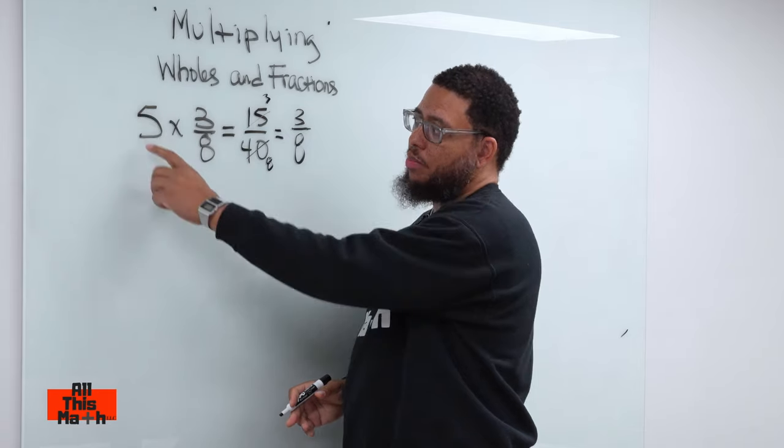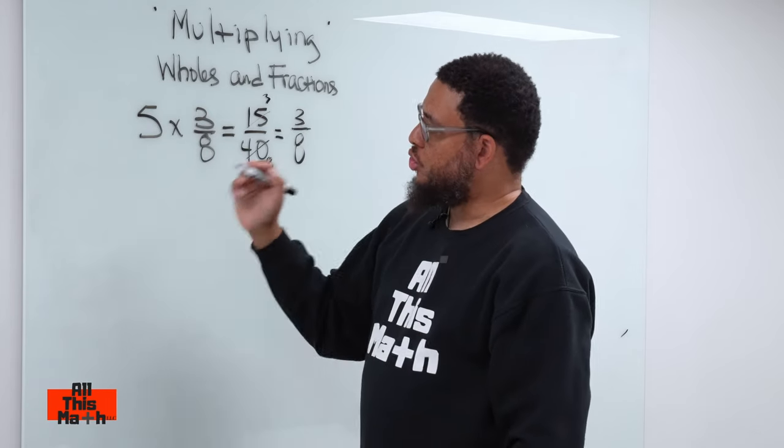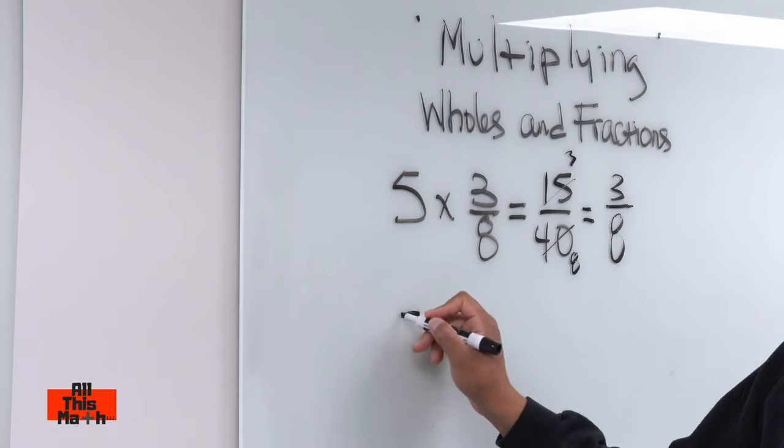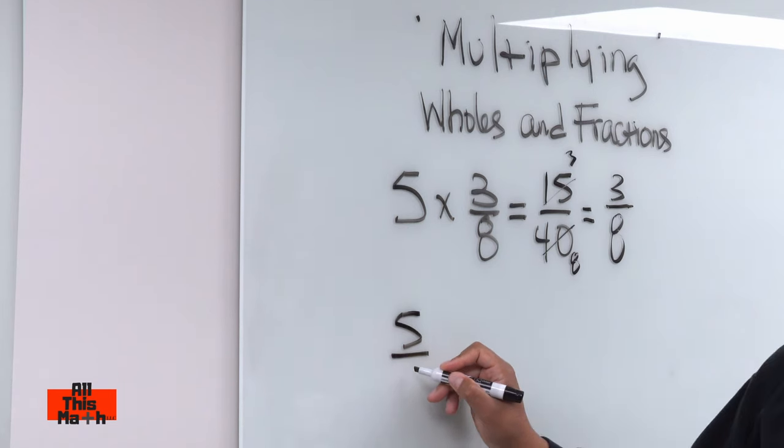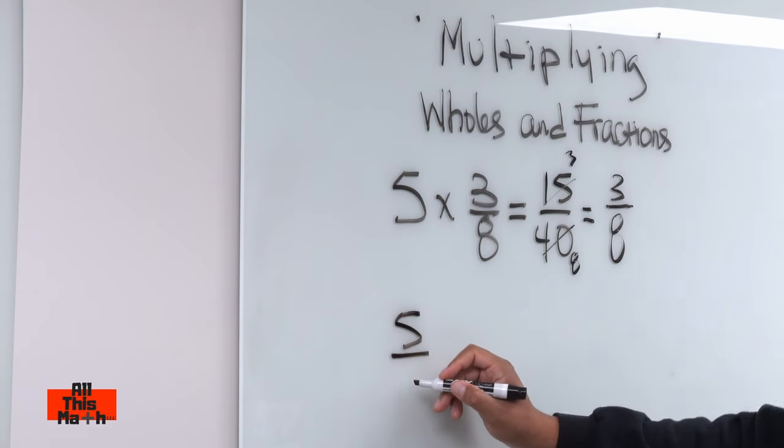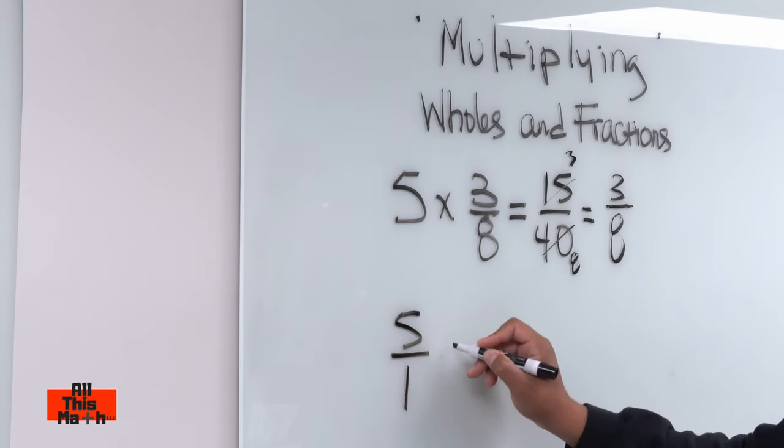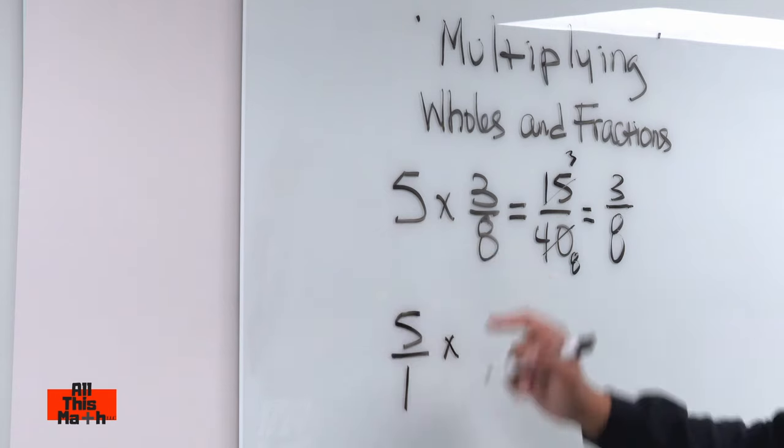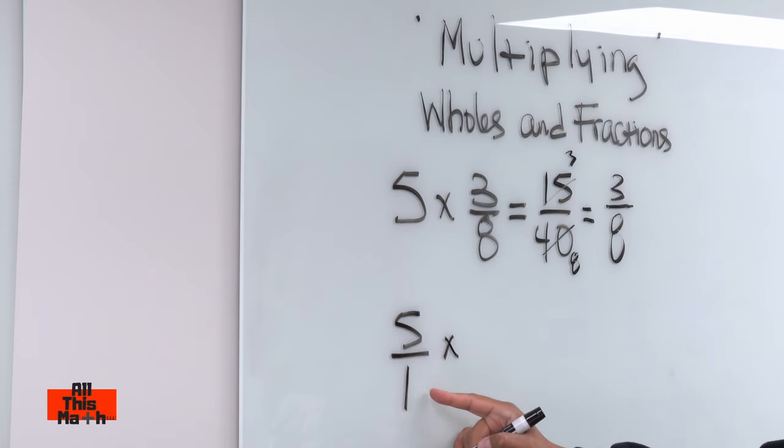What you got to do whenever you have to multiply a whole number by a fraction is you have to imagine that that whole number actually was a fraction. And the trick for turning a whole number into a fraction is you give it a denominator of one. So even if the one is not written you got to still respect it and treat it like it's there.